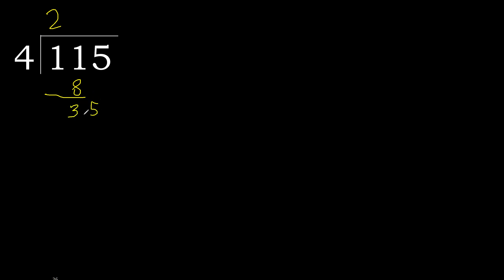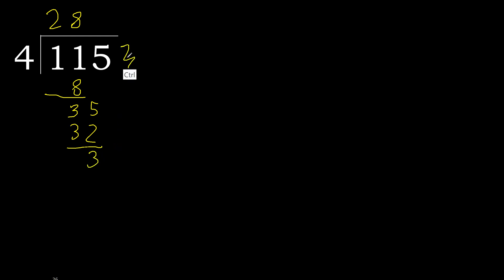Next, bring down 5, giving 35. 4 multiplied by 9 is greater. 4 multiplied by 8 is 32, which is not greater. Subtract: 35 minus 32 is 3. There is no next digit.